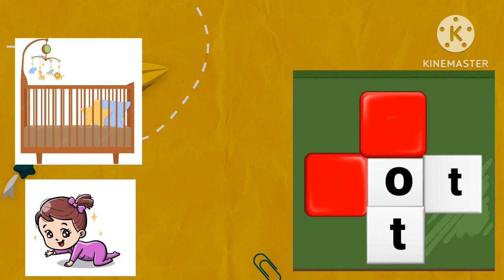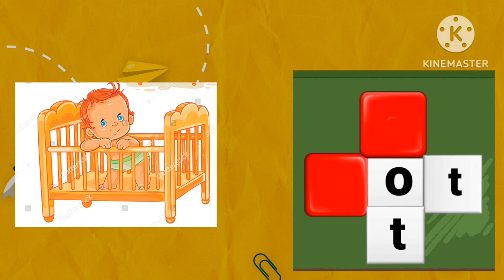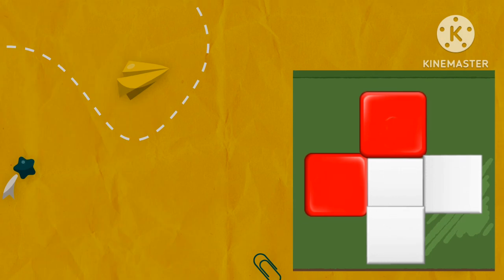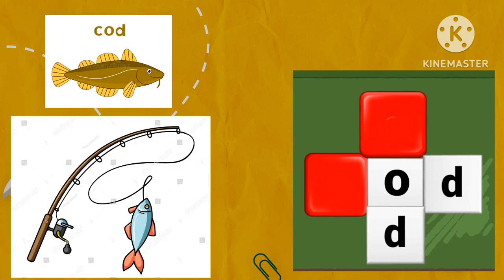Look at the pictures and guess the rhyming words. Cot, tot. Which letters are missing? Letter C and letter T. Drop letter C for cot and letter T for tot. Well done. Next, look at the pictures and guess the rhyming words.